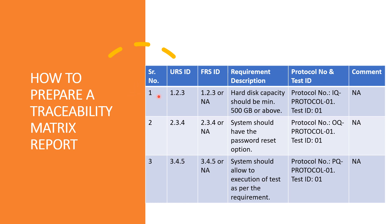You can see there will be the serial number, URS ID, FRS ID, requirement description, protocol number, test ID, and comment — a total of six columns. In the first column is the URS ID and in the second column is the FRS ID. If FRS ID is not available or the document is not applicable for that particular system, you can write it as not applicable.